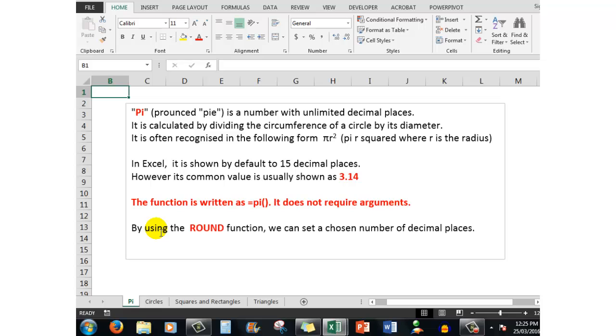I'll also show you how to use the ROUND function to set a chosen number of decimal places. Note that the function, written as equal pi, does not require arguments, but it does require the open and closed brackets.